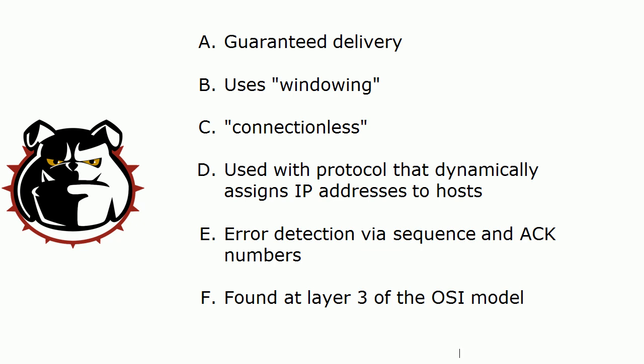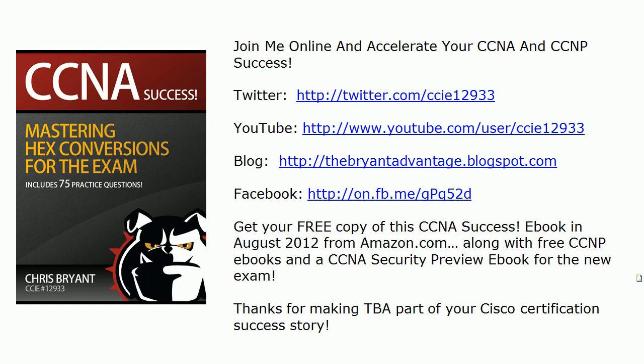Error detection via sequence and ACK numbers — that's definitely TCP. And finally, found at layer 3 of the OSI model — this is kind of two-in-one as well because you've got to know what layer 3 is. It's the routing layer, and you don't find either TCP or UDP there. You find them at the transport layer, which is layer 4 of the OSI model.